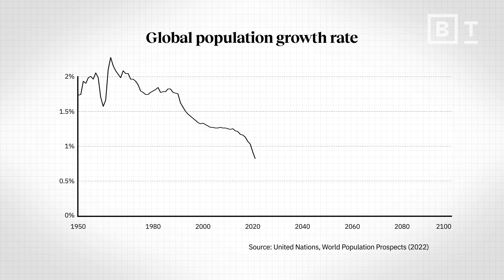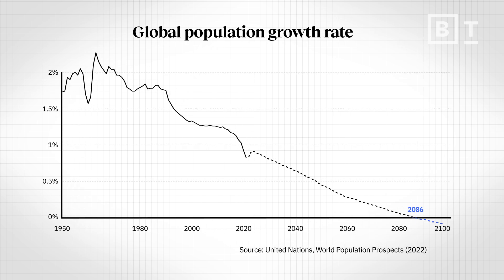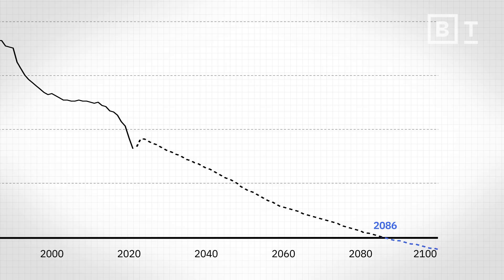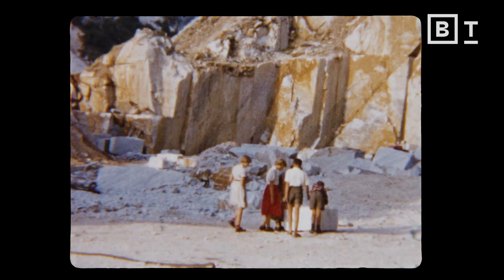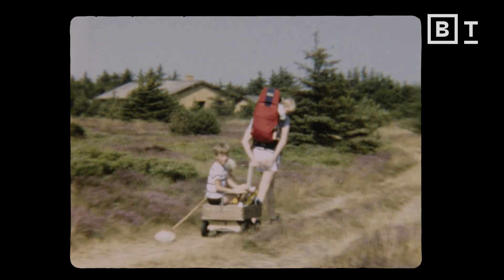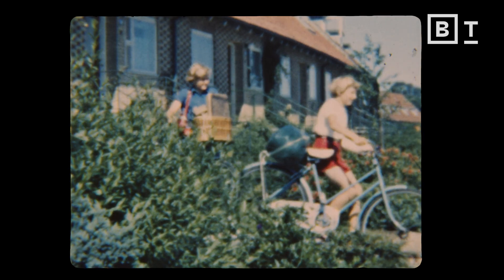If we look at projections into the future, the UN expects that global population will peak well before the end of the century and start to decline. The key thing they underestimated was the fall in global fertility rates — the average number of children a woman would have. Globally in 1950 that was around five children per woman. That has since fallen to 2.3 children per woman, and this is true across most countries in the world.